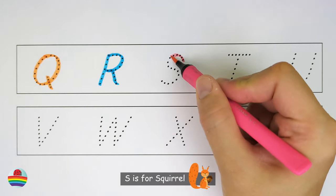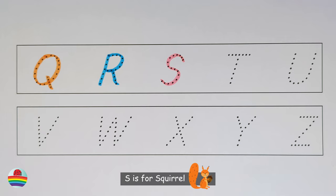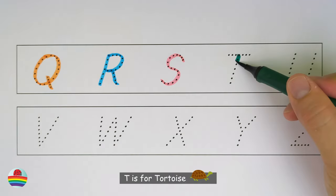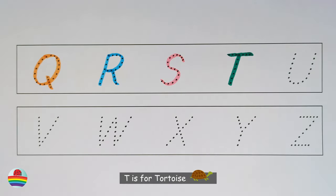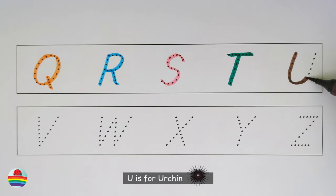S is for squirrel. T is for tortoise. U is for urchin.